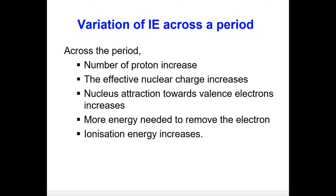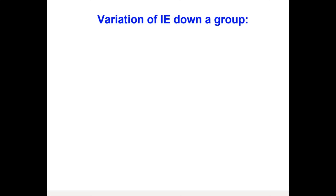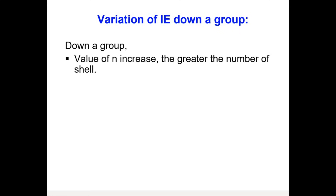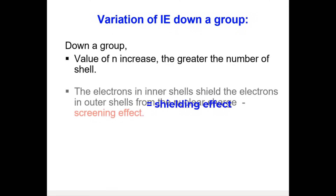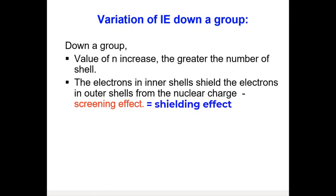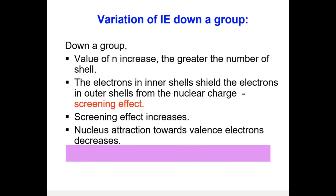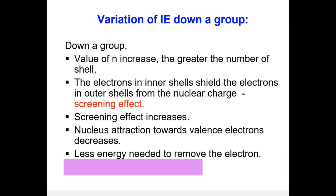Down the group, the number of shells increases, so the electrons in the inner shells shield the electrons in the outer shells from the nuclear charge — this is called the shielding effect. As a result, the nucleus attraction towards valence electrons becomes weaker down the group, less energy is needed to remove the electrons, and ionization energy decreases down the group.